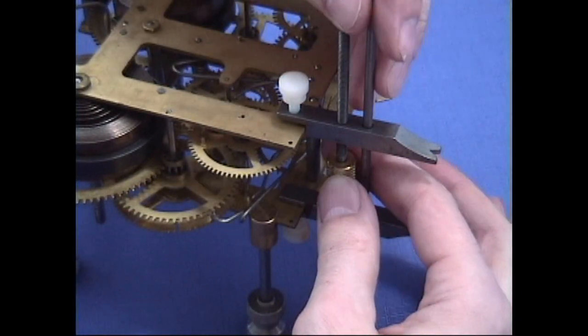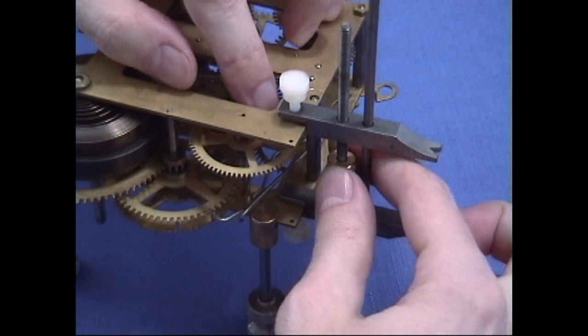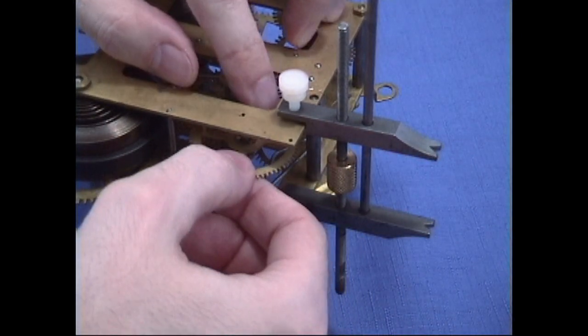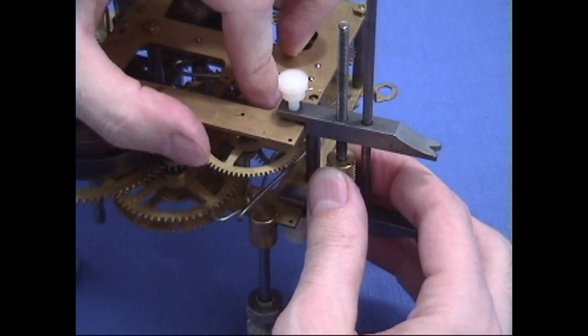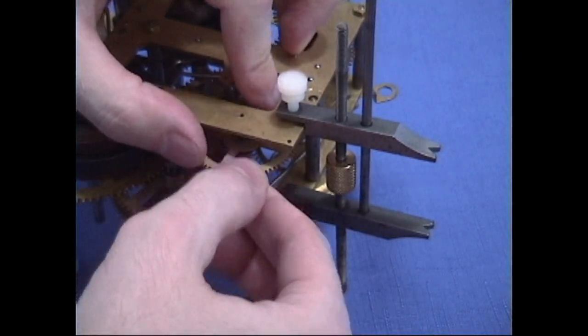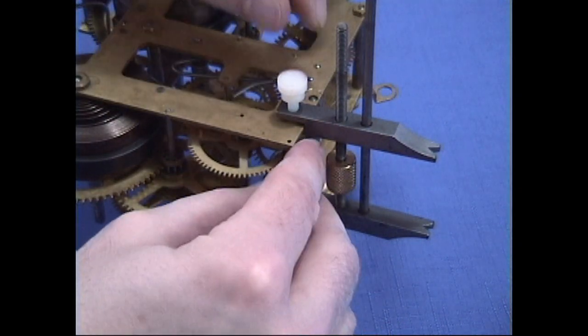So now you can spread it just a little bit more. We can loosen this wheel in here. Advance it to where we need it. Let the plate spreader down a little bit. Make sure we're back in our pivot hole. Put our governor back.